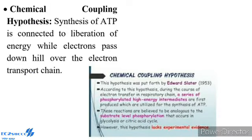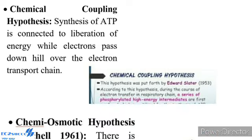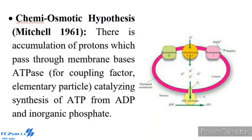Chemical Coupling Hypothesis: Synthesis of ATP is connected to liberation of energy while electrons pass down over the electron transport chain. Chemiosmotic Hypothesis: Given by Peter Mitchell in the year 1961. There is accumulation of protons which pass through membrane-based ATPase (coupling factor, the elementary particle), catalyzing synthesis of ATP from ADP and inorganic phosphate.